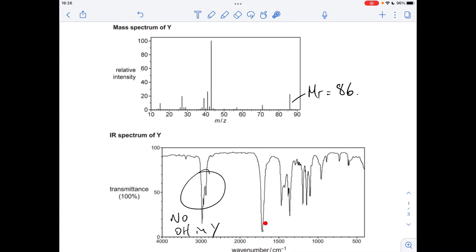But we can say that it has got, from this absorption here, a C double bond O. So what I'm saying now is because Y was formed by reflux oxidation and we haven't got an OH, so it's not a carboxylic acid. That means the alcohol X must be a secondary alcohol, which means that Y is a ketone.